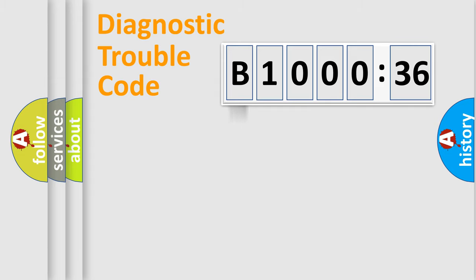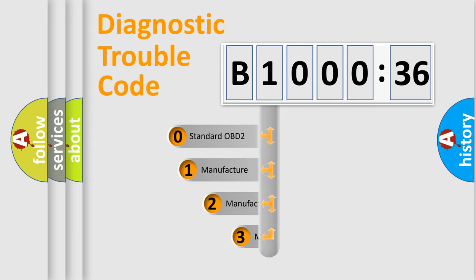Powertrain, Body, Chassis, Network. This distribution is defined in the first character code.